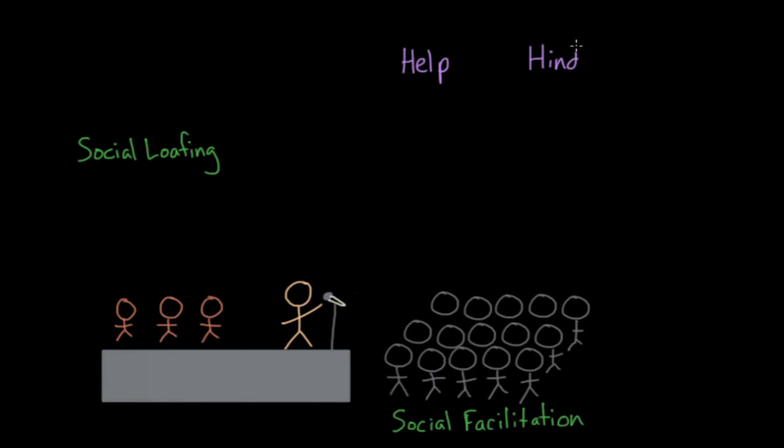According to the concept of social facilitation, the presence of others will increase the likelihood that the most dominant response for a particular behavior will be shown. So what does that mean? First, the dominant response refers to the response that's most likely to occur.